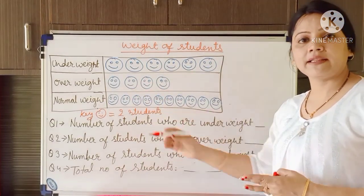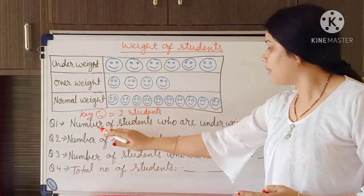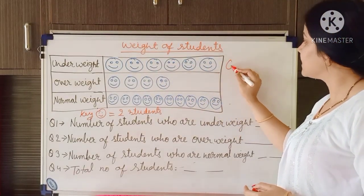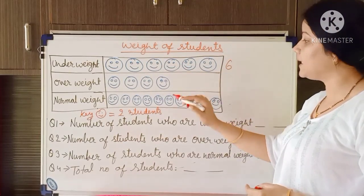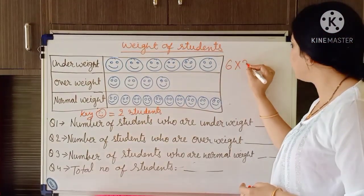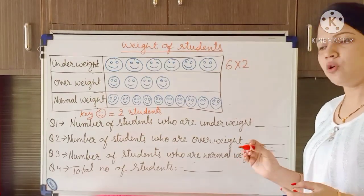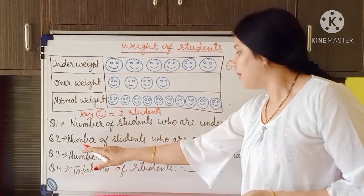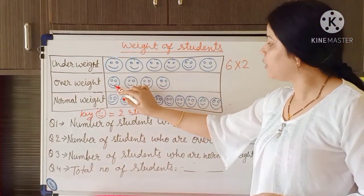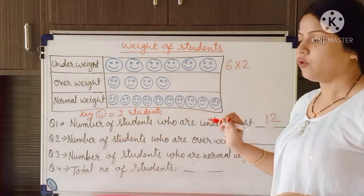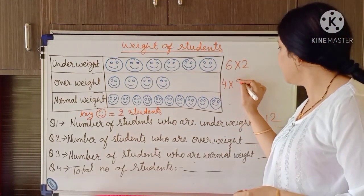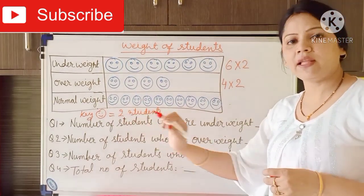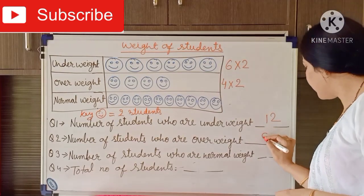So now, if we have to find out the number of students who are underweight — counting the smileys: 1, 2, 3, 4, 5, 6. But each smiley is equal to 2 students, so we multiply 6 by 2, which gives us 12. For overweight, there are 4 smileys, and we multiply by 2: 4 multiplied by 2 is equal to 8.